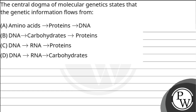Hello Bachu, let's read this question. The question says the Central Dogma of Molecular Genetics states that the genetic information flows from: option A, amino acid to protein to DNA; option B, DNA to carbohydrate to proteins; option C, DNA to RNA to proteins; option D, DNA to RNA to carbohydrate.